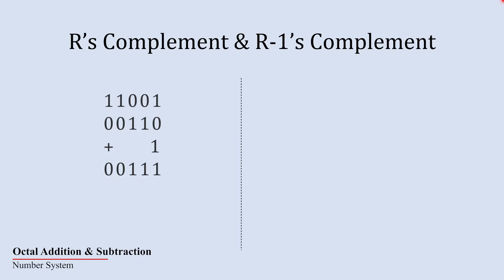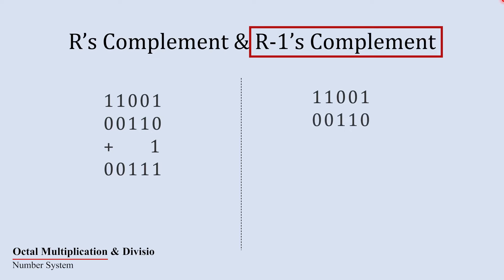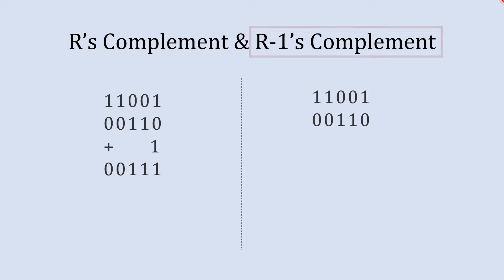R-1's complement is another method to represent negative integer numbers. It is achieved by flipping all the bits but does not include the addition of 1 to the least significant bit.